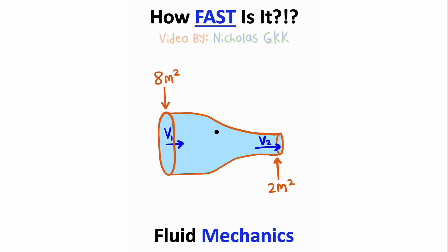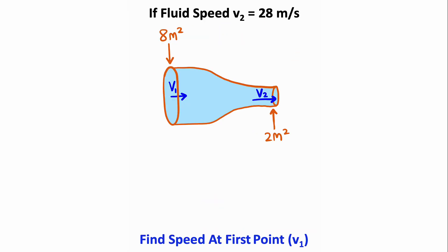Here we have a non-compressible fluid flowing through a pipe, and we want to know how fast the fluid is moving at this point. To solve this problem, we can use the continuity equation. The cross-sectional area at this point of the pipe is 8 square meters. The cross-sectional area at this point is 2 square meters. The velocity of the fluid as it travels through this cross-sectional area is 28 meters per second.